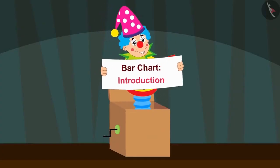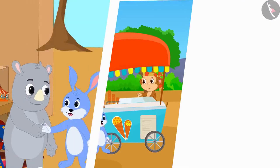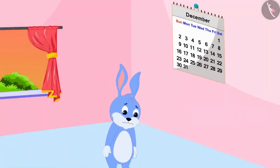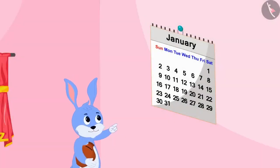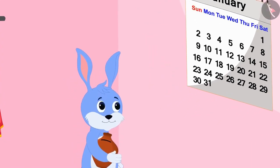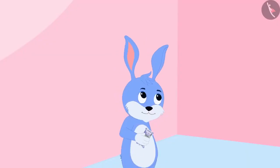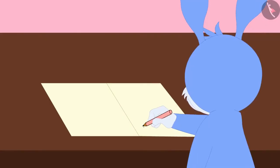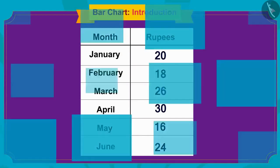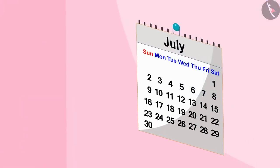In this video, we will learn about bar charts. Bunny started spending a lot of money every month, due to which by the end of the month all his money would be over. Thinking about saving, Bunny started saving money every month. He would put the money saved in a piggy bank and then write the amount saved in a table in a notebook. In no time, six months passed by.